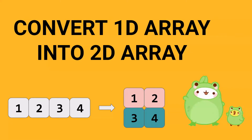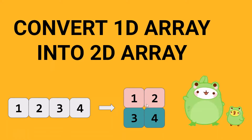We are going to solve a problem in which we have to convert a 1D array into a 2D array. As you can see in this example, you are given 1, 2, 3, 4 and you have converted it into a two-dimensional array with two rows and two columns.